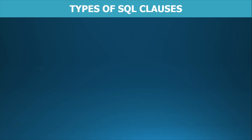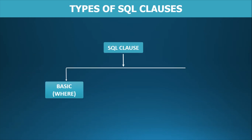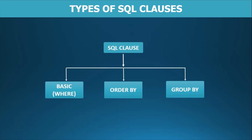Types of SQL clauses. SQL clauses are divided into three types. The first one is the basic clause which uses a condition. The second one is ORDER BY, which is used to sort the data in tables in either ascending or descending order. And the last one is GROUP BY, which is used for organizing similar data into groups.